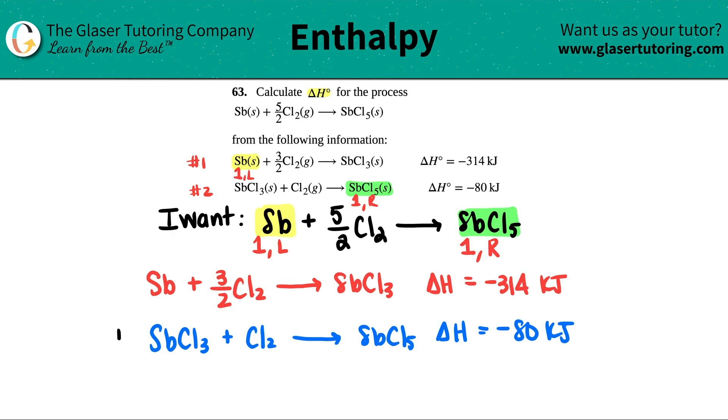So now I'm going to add this all up. Now cancel things out that are on opposite sides. Now look, I have an SbCl3 on the products of the first one and I have an SbCl3 on the reactants of the second one. Those get canceled. Things that are on opposite sides that are the same, they get canceled. Now in this case, I have Cl2 and Cl2 on the same side. That's addition. So you don't cancel these out, you actually add the coefficients together.